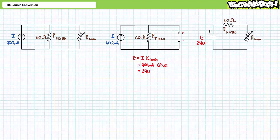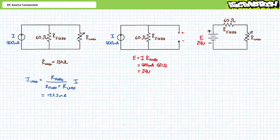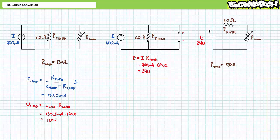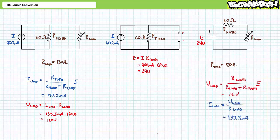If everything I've said is true, these two different source configurations will induce the same voltage drop across and the same current through for a range of variable load resistors. Let's say we set the variable load resistor to 120 ohms. Our original configuration is a perfect setup for the DC current divider rule. An application of the DC current divider rule demonstrates current through the variable load resistor will be 133.3 milliamperes. A subsequent application of Ohm's law demonstrates voltage across the variable load resistor will be 16 volts. Our substitute configuration is a perfect setup for the DC voltage divider rule. An application of the DC voltage divider rule demonstrates voltage across the variable load resistor will be 16 volts, and current through will be 133.3 milliamperes. Equivalency has been maintained and the load resistance is none the wiser.